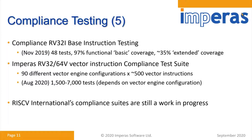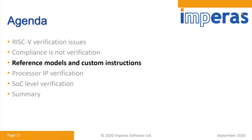One area we focused on is vector instructions — there are some 500 vector instructions, and each vector engine can have many different configurations. Our current test suites are over 7,000 tests, depending on the vector engine configuration. We have three different customers using that, and one of them is presenting at this conference the results. Compliance testing is still a work in progress within RISC-V International in the task group.